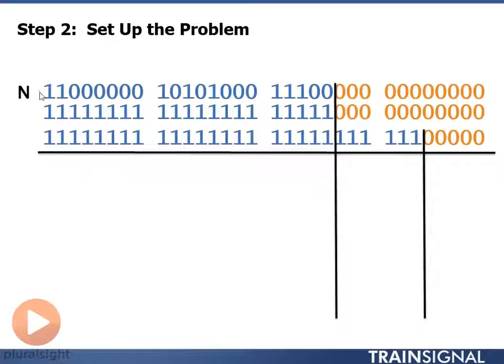So I set up my problem. I put my given network address, my given subnet mask, and then I put my calculated subnet mask.